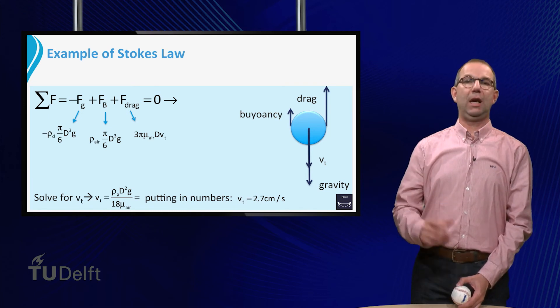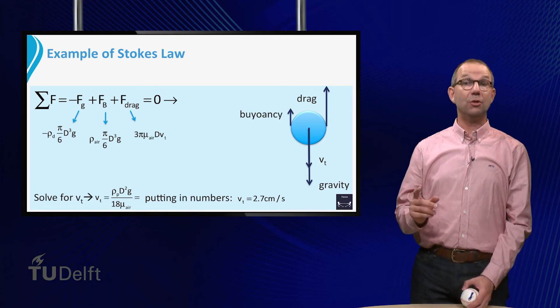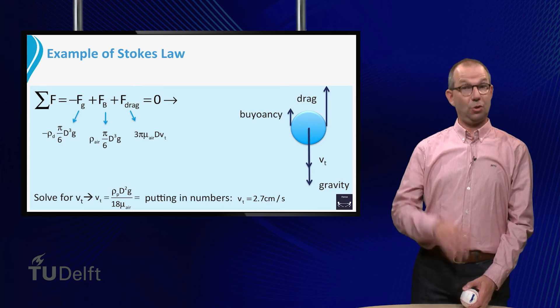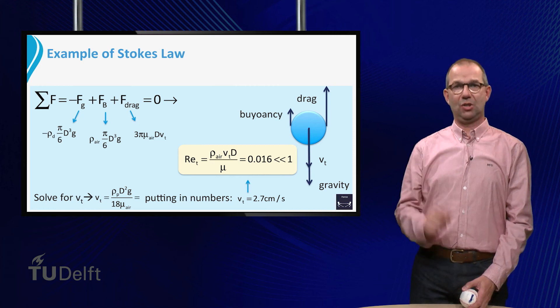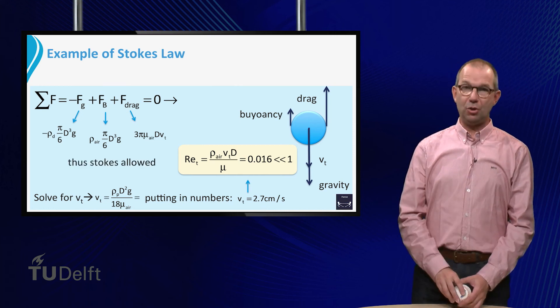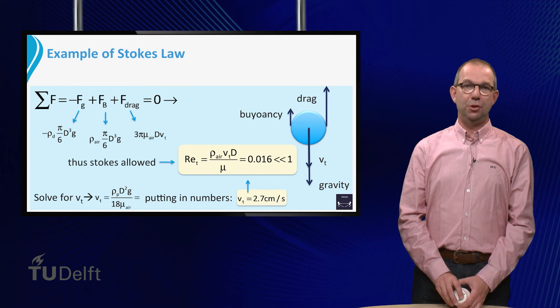We should not forget to check whether we are allowed to use Stokes law. So, we compute the Reynolds number. It is 0.016, indeed much smaller than 1, and the use of Stokes law is justified.